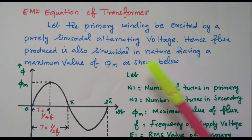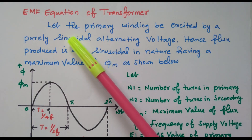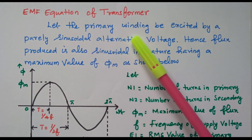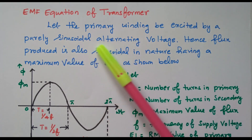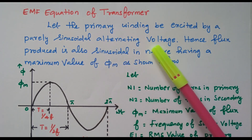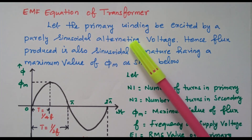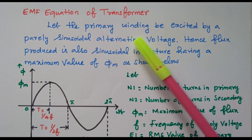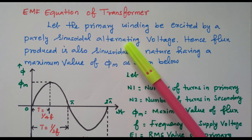Now we will go to the topic: EMF equation of a transformer. Let the primary winding be excited by a purely sinusoidal alternating voltage. We know that in a transformer we have primary winding and secondary winding, and the primary winding is excited by a sinusoidal alternating voltage.